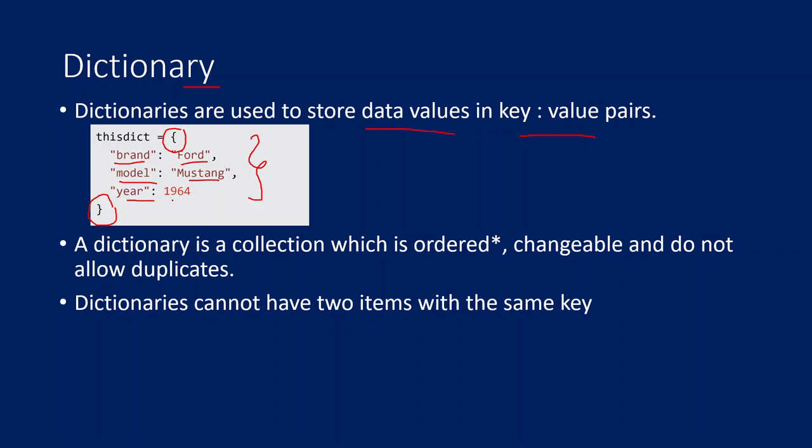If you store data by opening a flower bracket and closing a flower bracket, and in the middle use key-value pairs, then this is a dictionary type in Python. You might have seen this kind of data in JSON. This is similar to JSON type data. When you use JSON type data inside Python, we call it a dictionary data type.